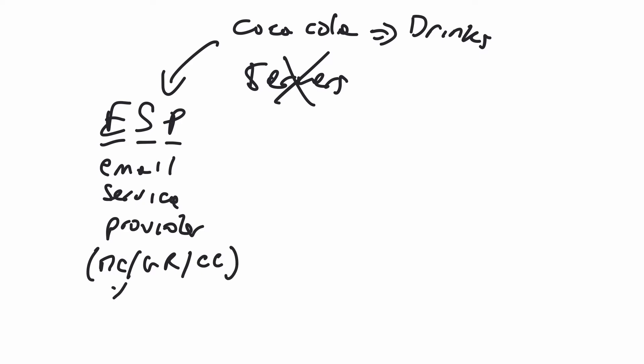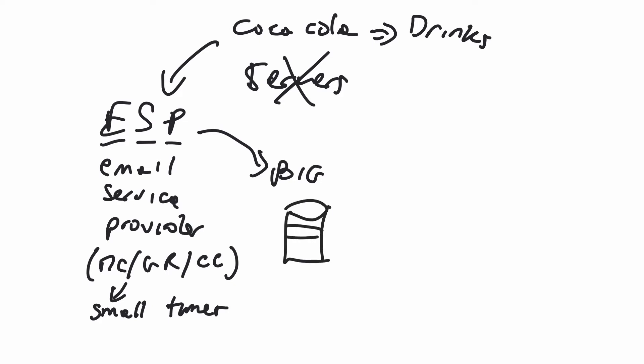Those are small timers — for individuals and people without big budgets. The ones I was working for are the big ones. The main difference is: with the small ones you pay based on the size of your database. With us, your database can be as big as humanly possible because we're talking about millions of people. Some customers had 3 million, Coca-Cola had 10 million. We charged something called CPM — about 5 cents per thousand emails sent.